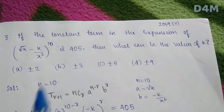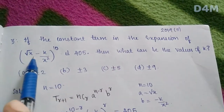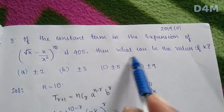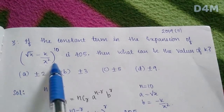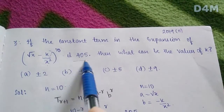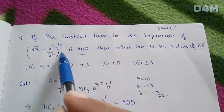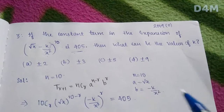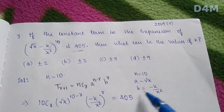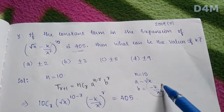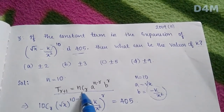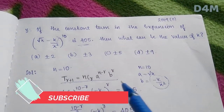If the constant term in the expansion of (√x - k/x²)¹⁰ is 4.05, what can be the values of k? Here n is 10, a is √x, and b is -k/x². We have the formula for the general term: t(r+1) = nCr · a^(n-r) · b^r.